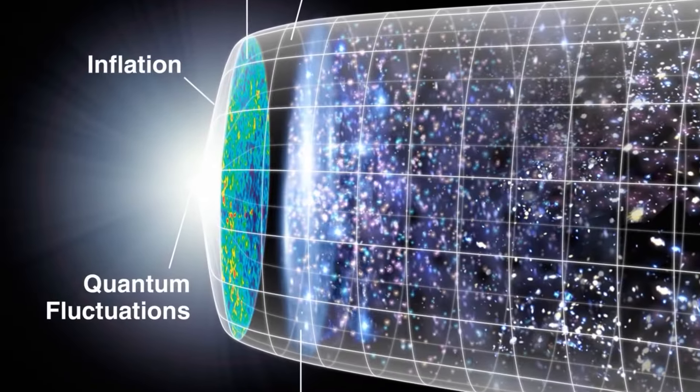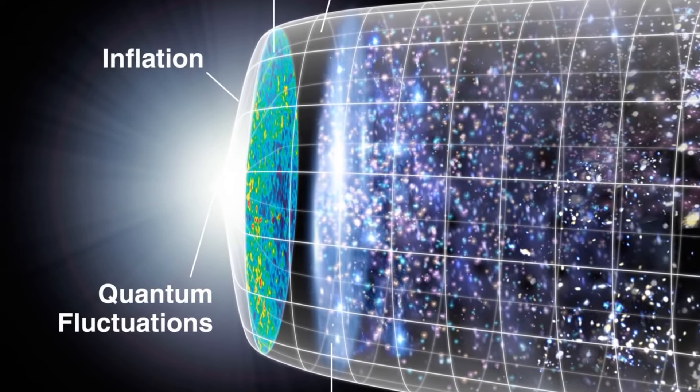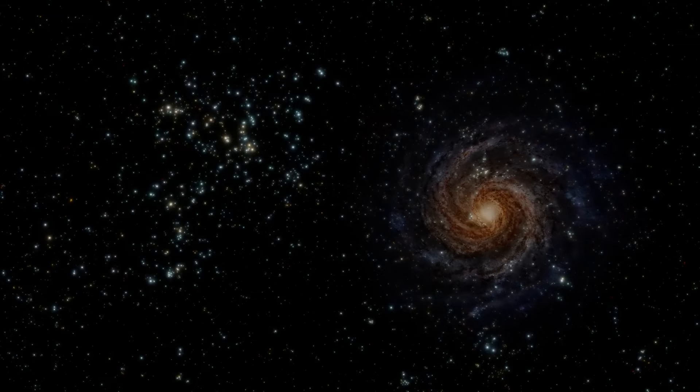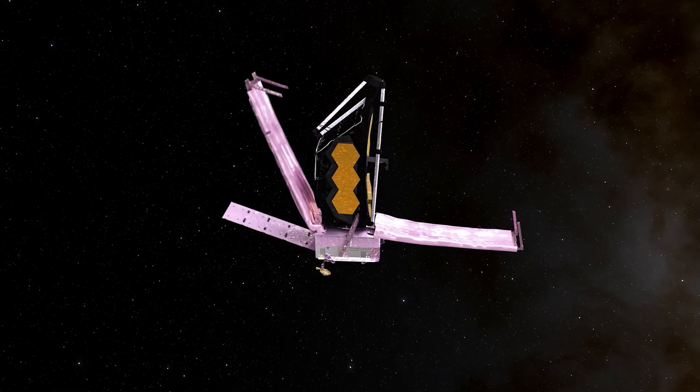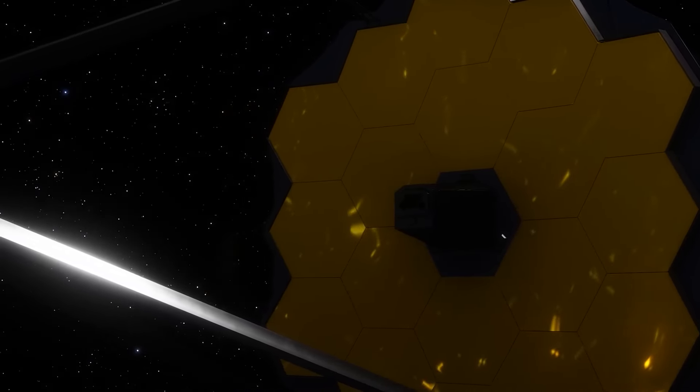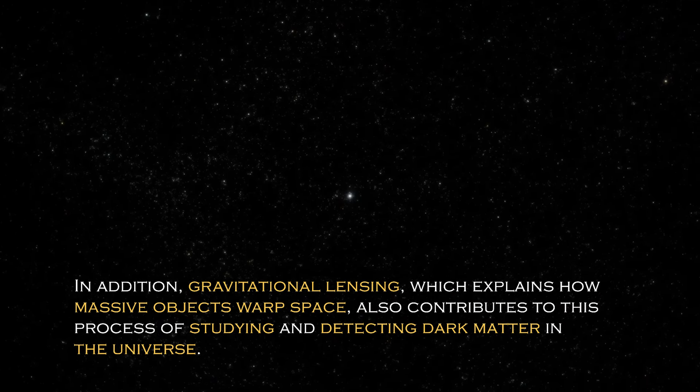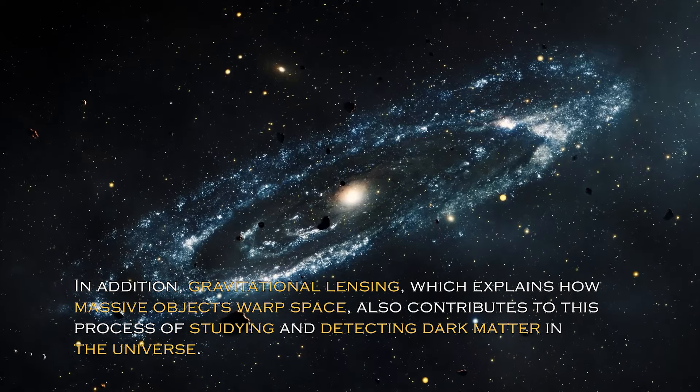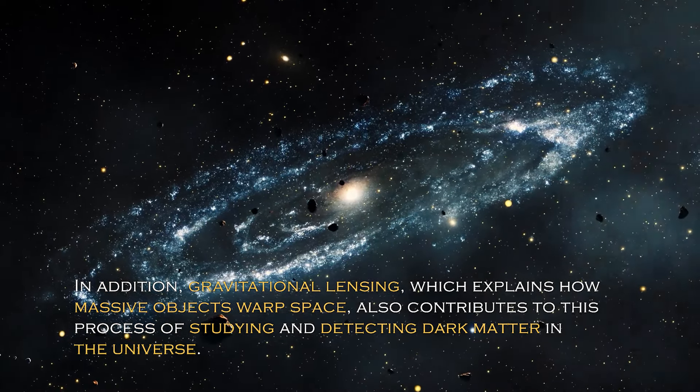For example, the theory of universal expansion suggests that the universe is constantly expanding, pushing galaxies and galactic clusters farther and farther apart — a process believed to have occurred since the beginning, 13 billion years ago. Scientists postulate that dark energy is a mysterious force behind this expansion, while dark matter, invisible but existing in the universe, also plays a crucial role. Several methods have been developed to measure or detect dark matter, with the James Webb being a valuable resource because of its high-resolution images. Additionally, gravitational lensing, which explains how massive objects warp space, also contributes to studying and detecting dark matter in the universe.